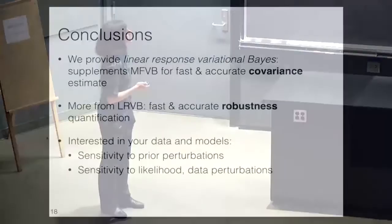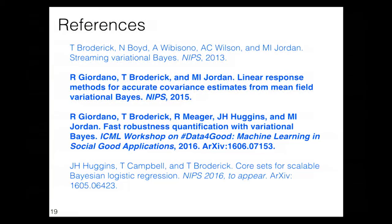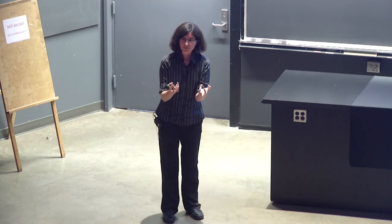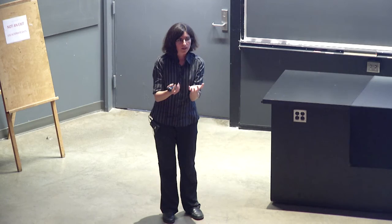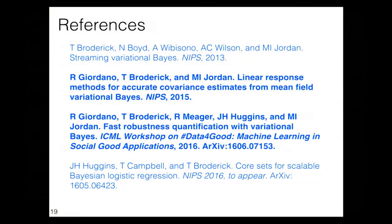Our work on accurate covariance estimates appeared in NIPS 2015. The robustness work has a workshop paper, with a full journal paper in progress. Also appearing in NIPS 2016 is work on core sets: a preprocessing algorithm that compresses data to a small summary, after which any posterior approximation method — MCMC or variational Bayes — can be applied with theoretical guarantees on inference quality. Thank you.